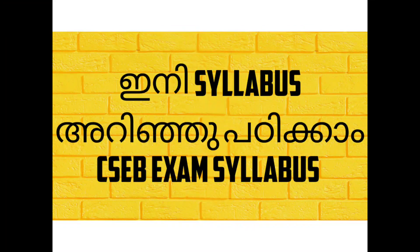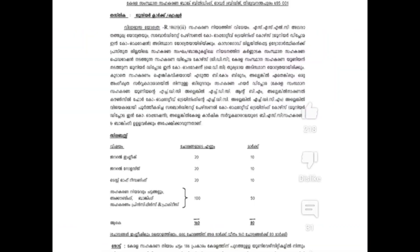We are going to see the first one. Now let's see the General English and General Knowledge. We are going to see general English and general knowledge. Test of Reasoning, and I will see the basics of accounting, banking, principles and practice. If you are going to see the exam, you will see the syllabus. In the first one, we will see the auditing.